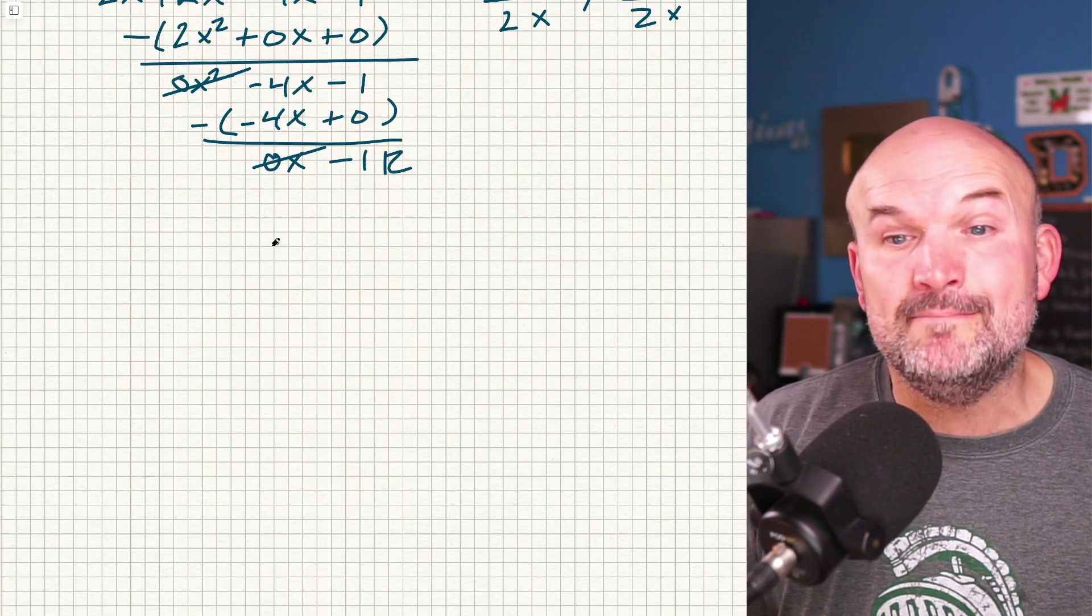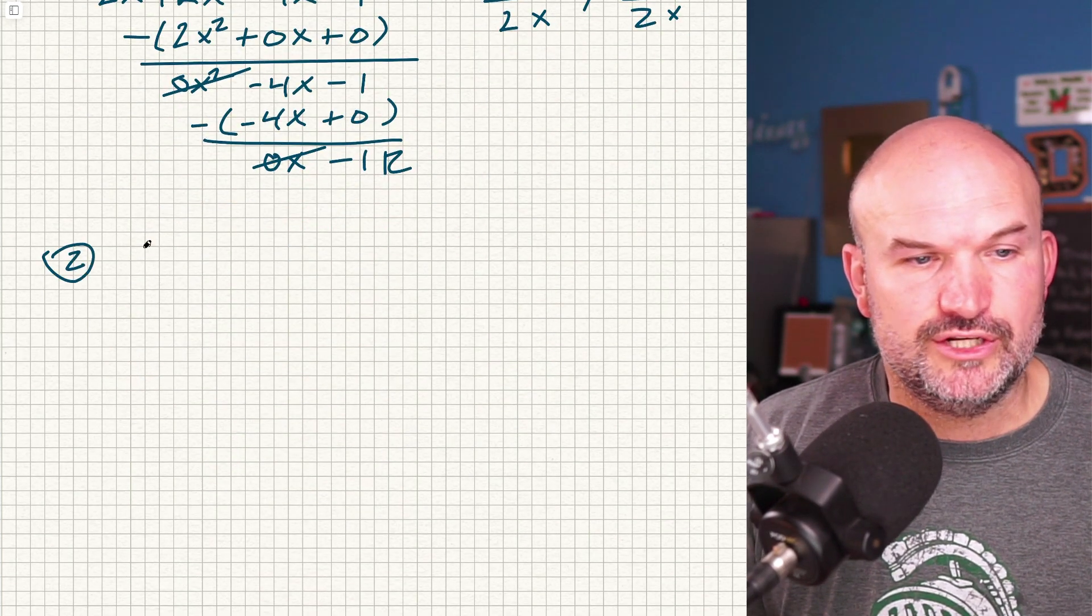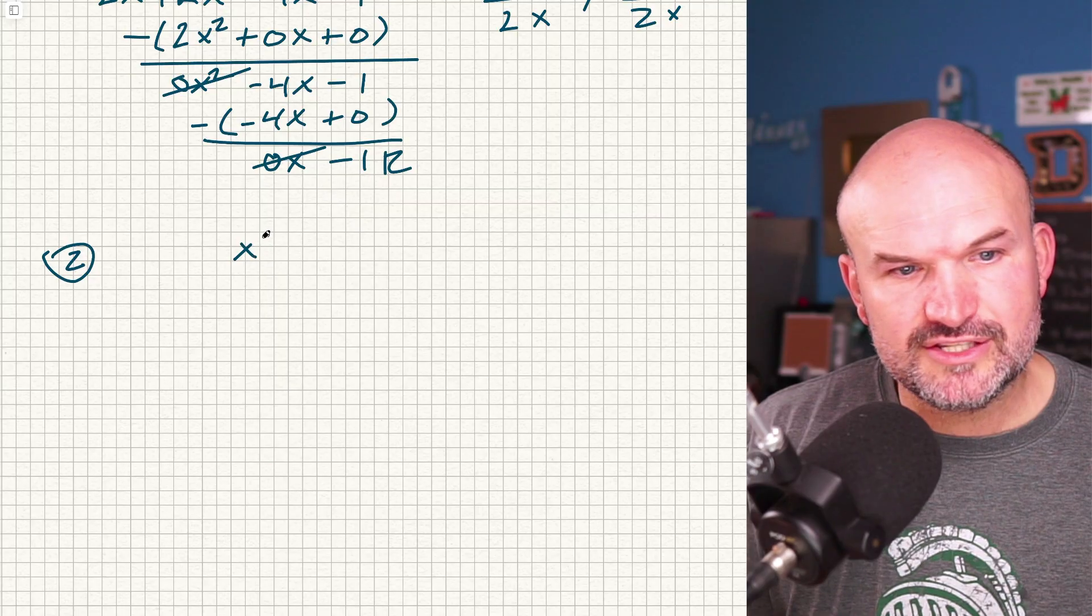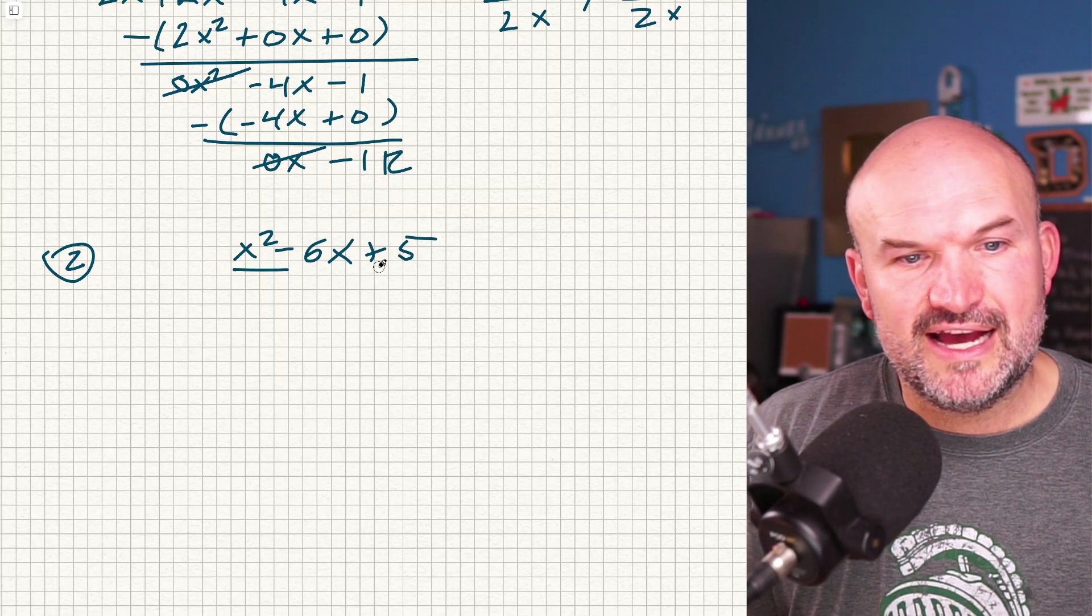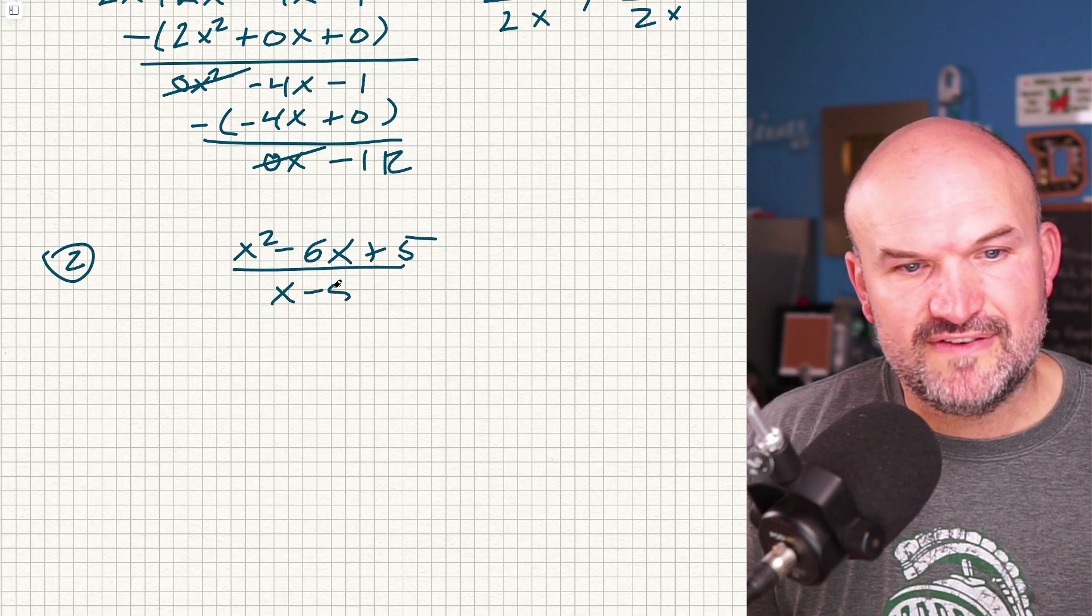Let's work on something really easy with a binomial. This would be question number two. Let's do something simple. So if I had x squared minus 6x plus 5 divided by x minus 5.